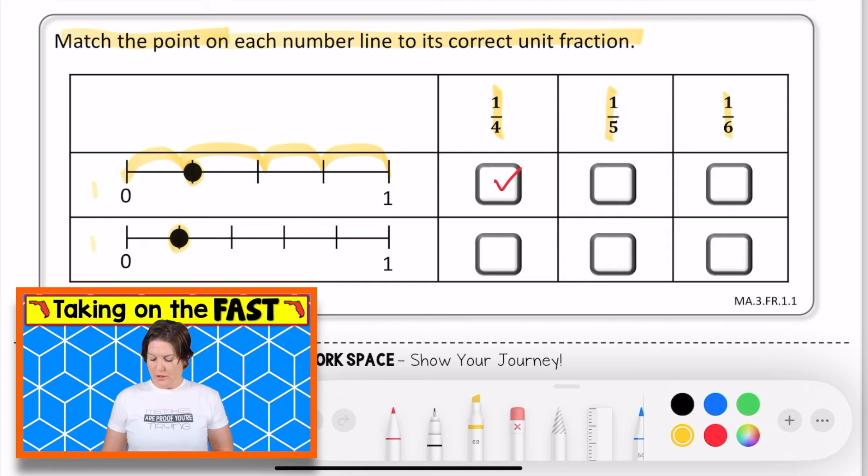For the next one, our point is right there at the first fraction, the first part of our fraction or unit fraction. And starting at the zero, there are one, two, three, four, five total number of equal parts. So we should have a one in the numerator and a five in the denominator, which would make our answer one fifth.